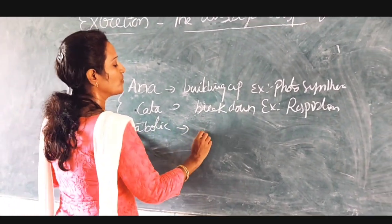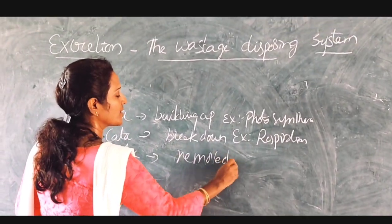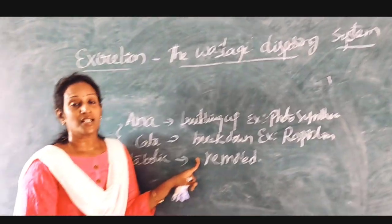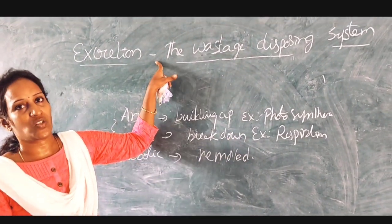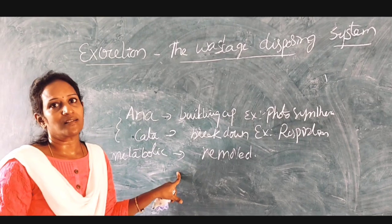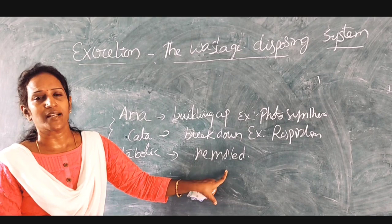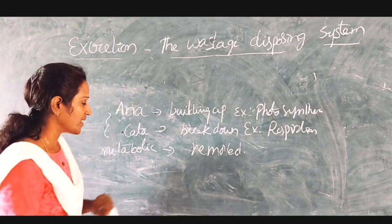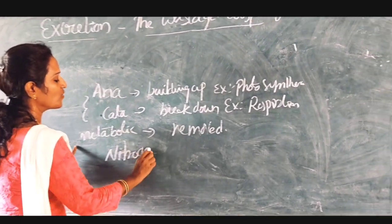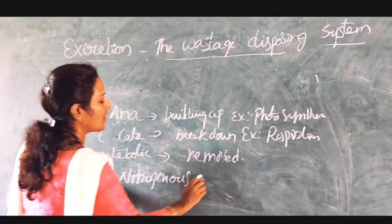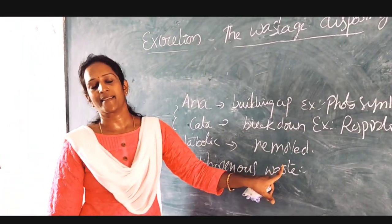This waste should be removed. When it is not removed, it causes harm to the organism. It should be removed by excretion. The waste products produced include nitrogenous waste: ammonia, urea, uric acid, bile pigments, and excess water. These should be removed.